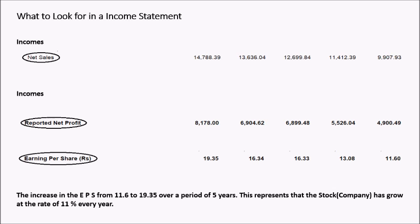Now let us see what to watch out for in a company's income statement. As a shareholder, you always want the company to report good sales. Increase in sales is also a factor which will increase the company's profit. You want the net profit to increase through sales, not just through other incomes. Therefore, increase in sales is equally important as increase in profits. The most important item an investor must watch is earnings per share, as the average growth in EPS tells you about the average growth in the company's profit every year.